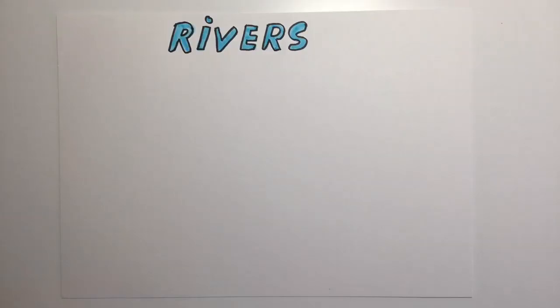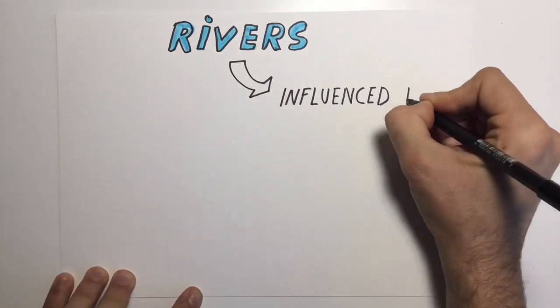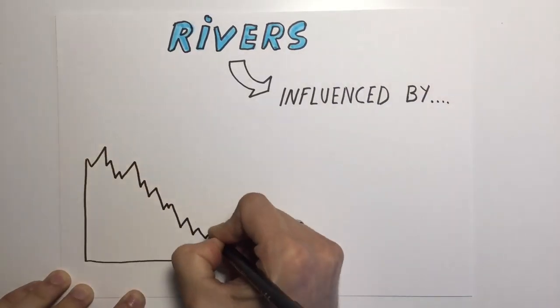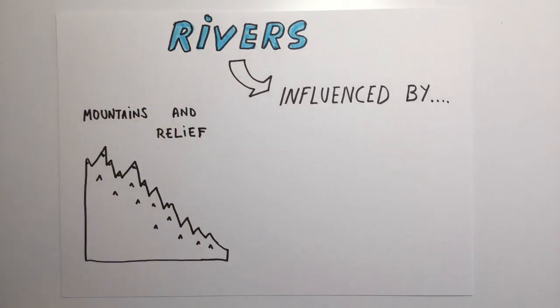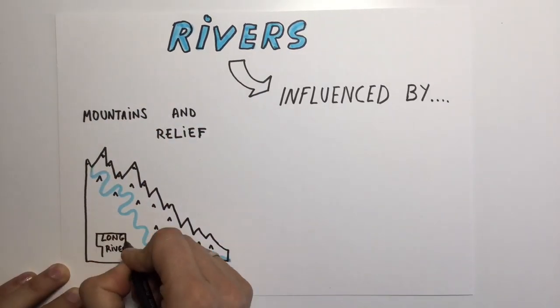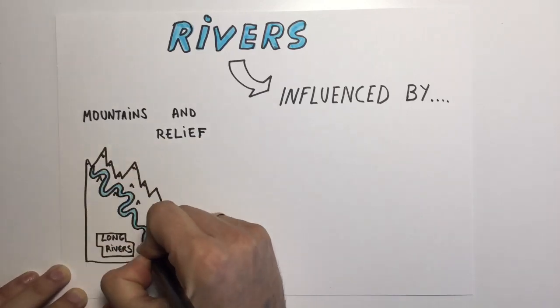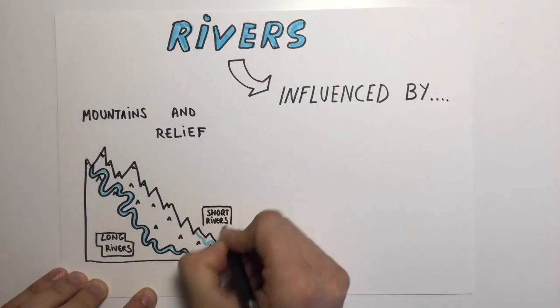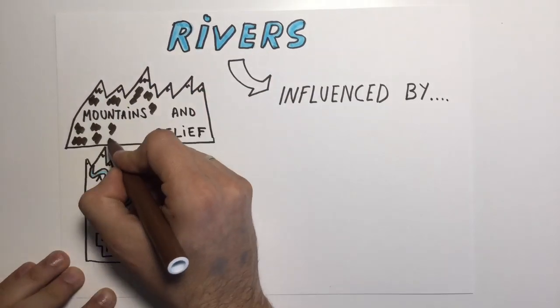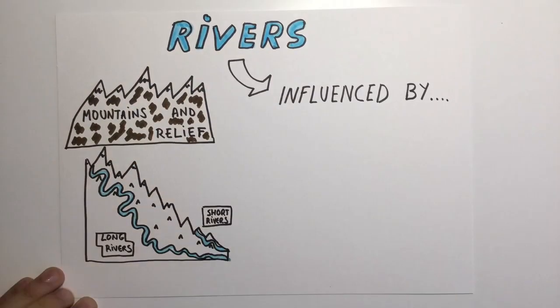The flow of the rivers has two main influences. The first one is the mountains and the relief. Rivers are long when they come from a long way from the sea. Rivers are short when they rise in mountains near the sea.